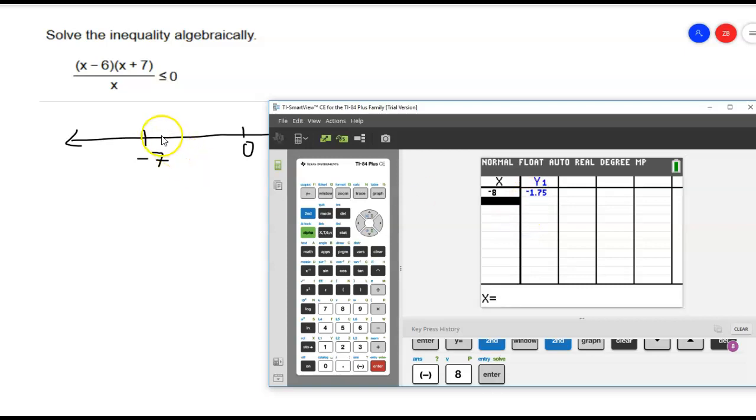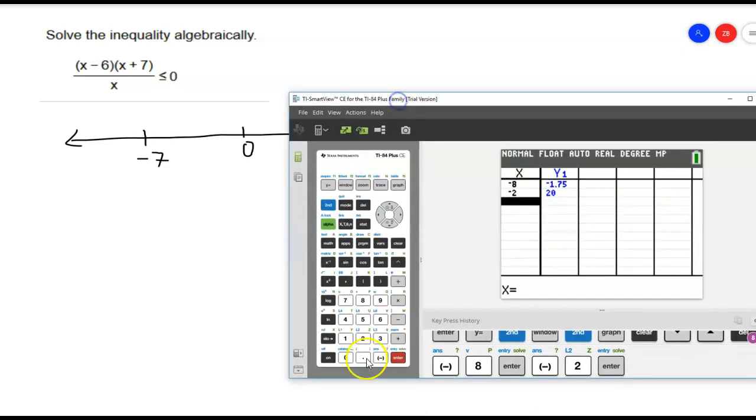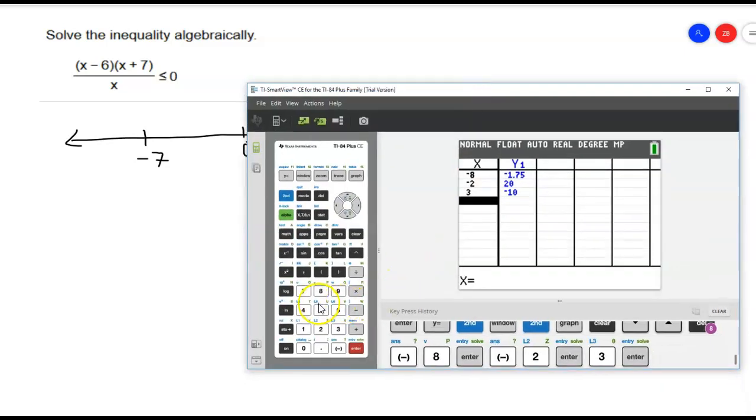Pick the value there. So I get a negative y value. Now I'm going to pick something between 0 and negative 7. I can pick anything I want. I'll pick negative 2. See, I get a positive value. Now I'm going to pick a value between 0 and 6. I'll pick 3.